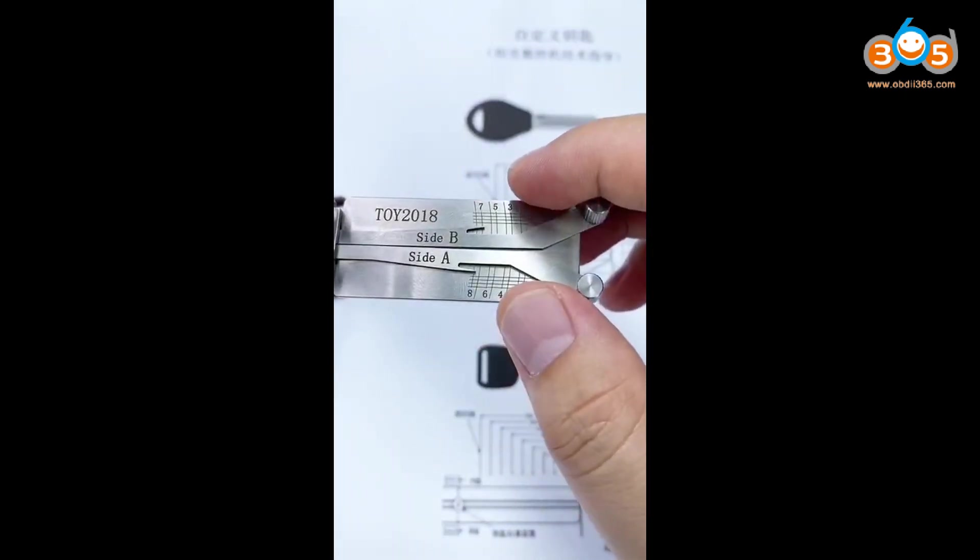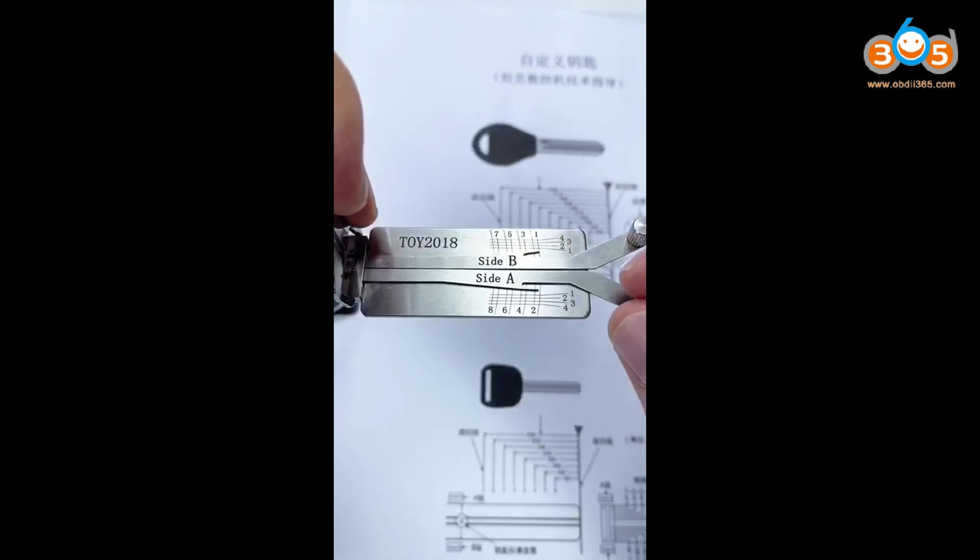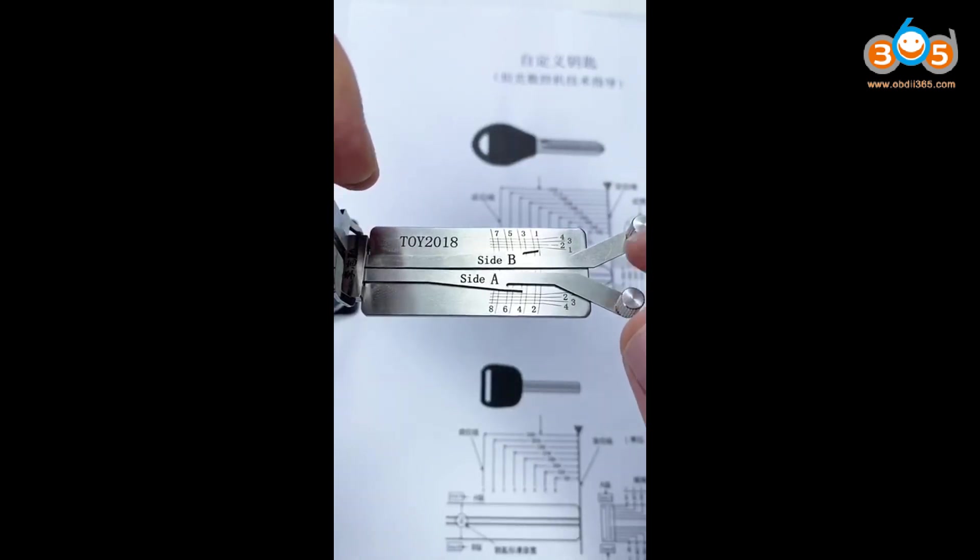Position A is down, B is up. Keep pushing tension bar. At first, use Lifter A. If spongy, another one.